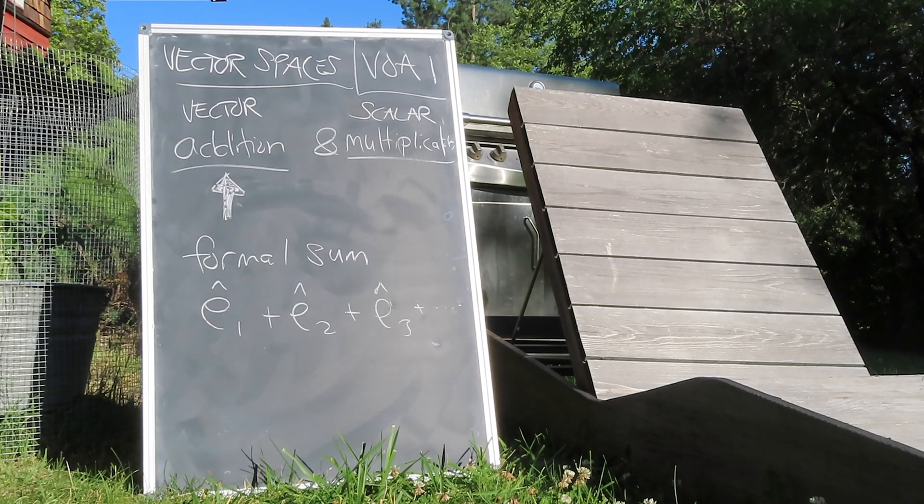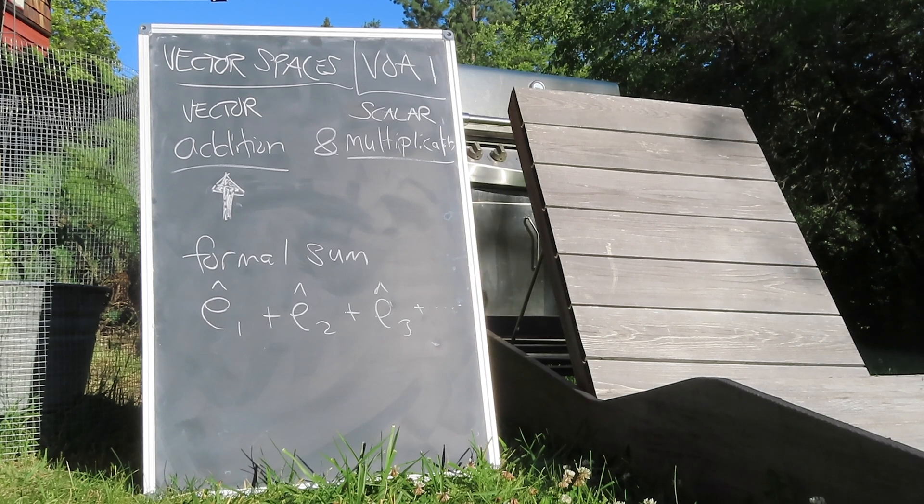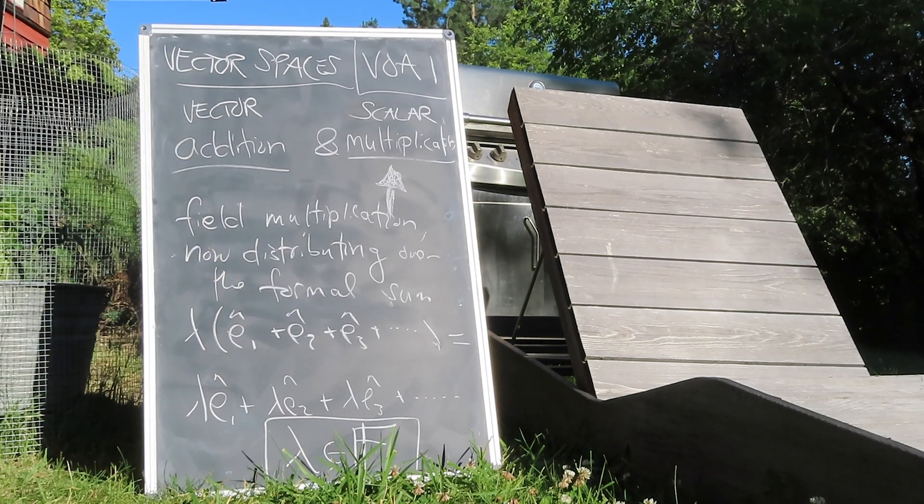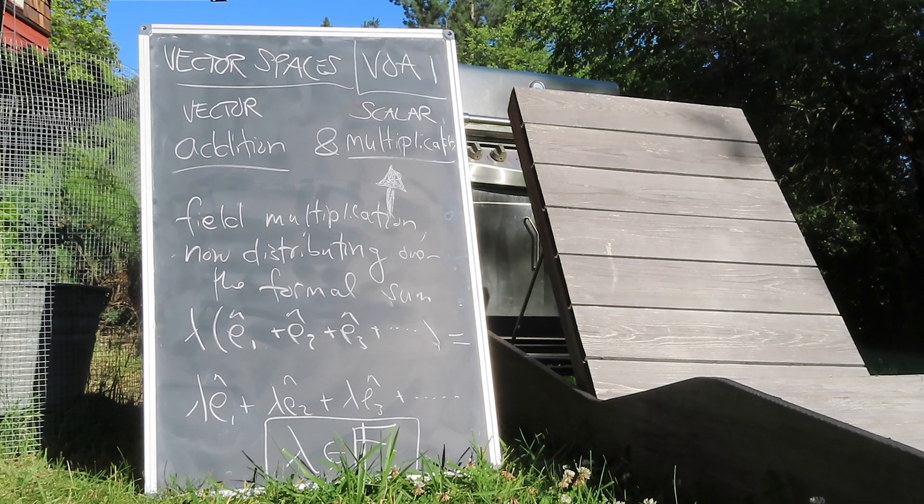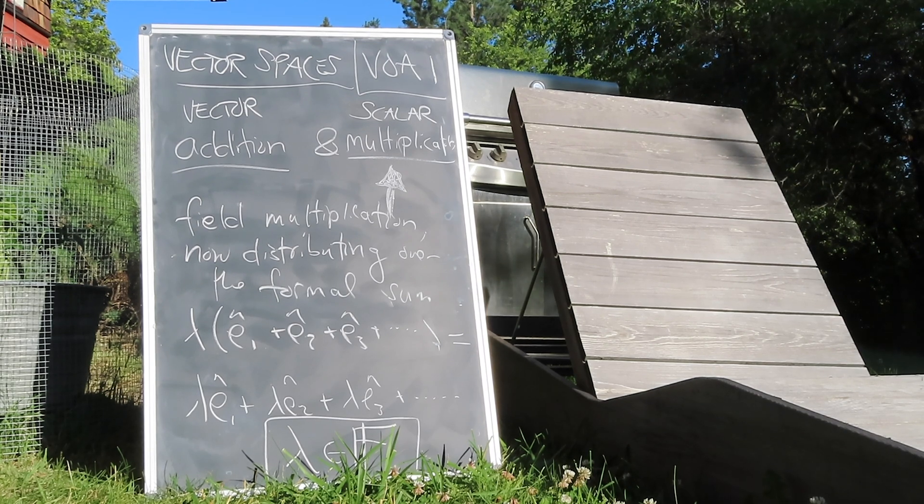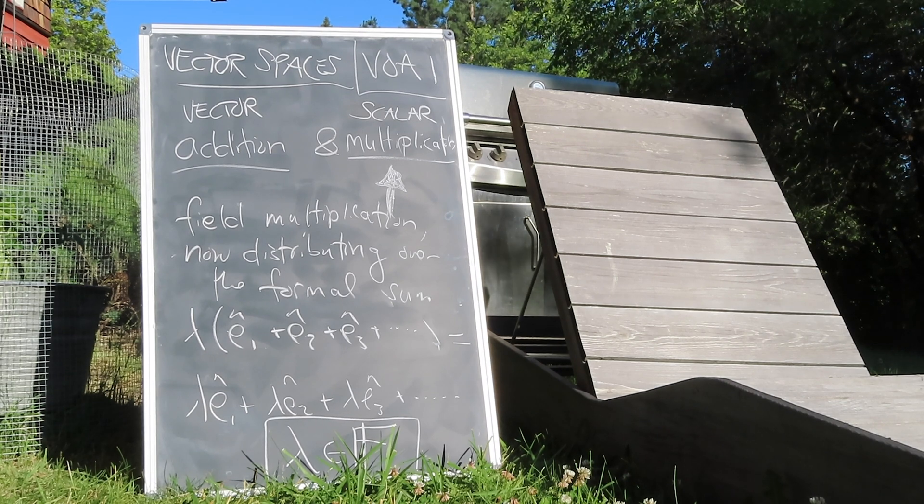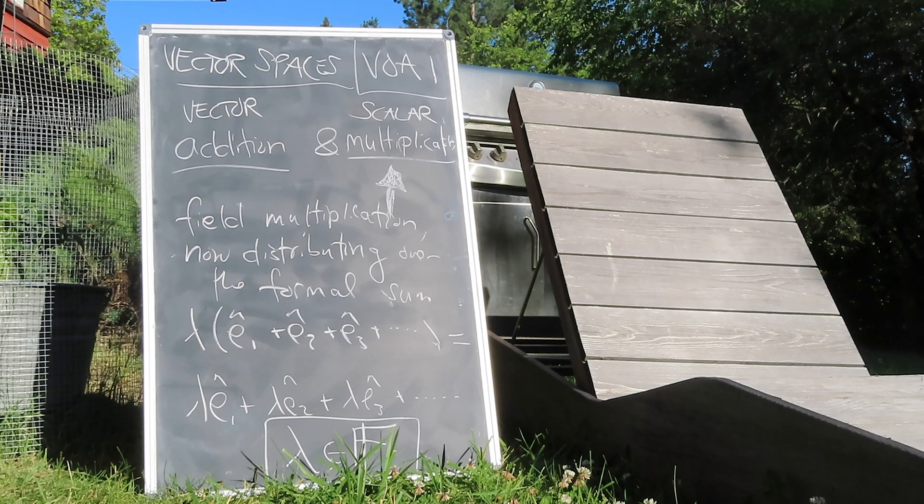Vector addition can be thought of as a formal sum over some copies of that given field. And scalar multiplication can be thought of as an extension of that field's multiplication to distribute over that formal sum. From this perspective, the operations of vector spaces coincide with those of the underlying field precisely when two vectors are linearly dependent.